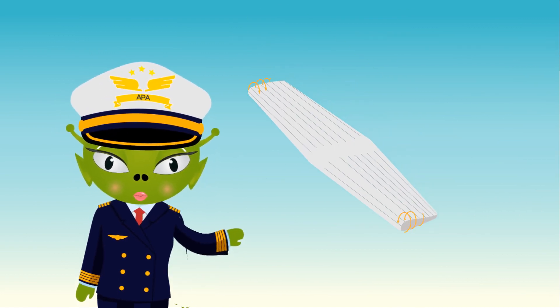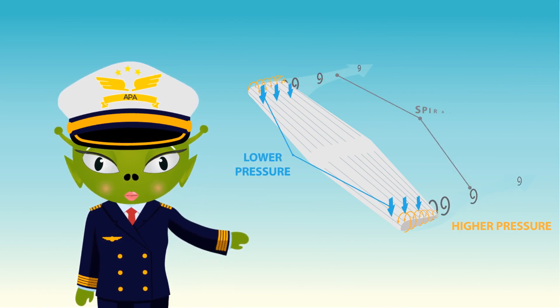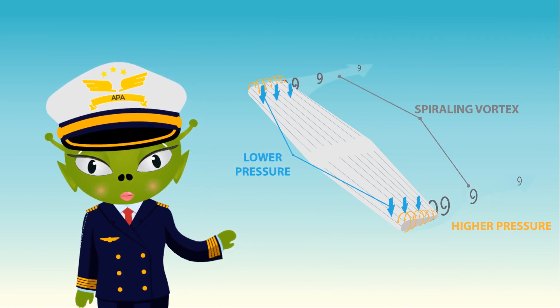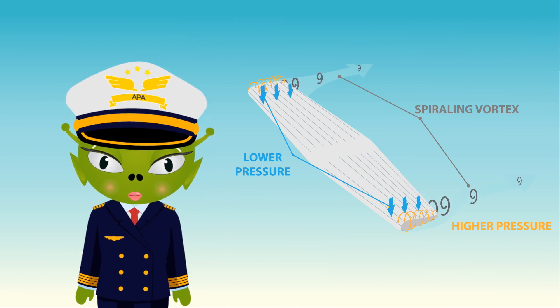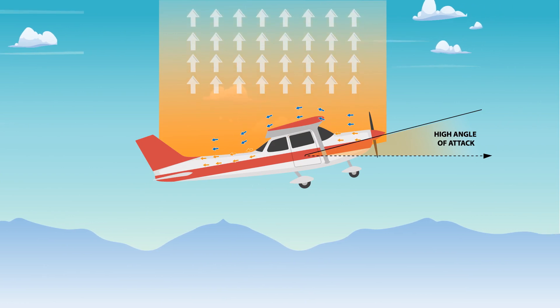However, some of this higher pressure air escapes around the wingtip to the lower pressure area above the wing, creating wingtip vortices which impede lift. The amount of lift created by an airfoil is primarily affected by the speed of the air over the wing, and the difference between the relative wind and the angle of the wing to that wind, angle of attack.